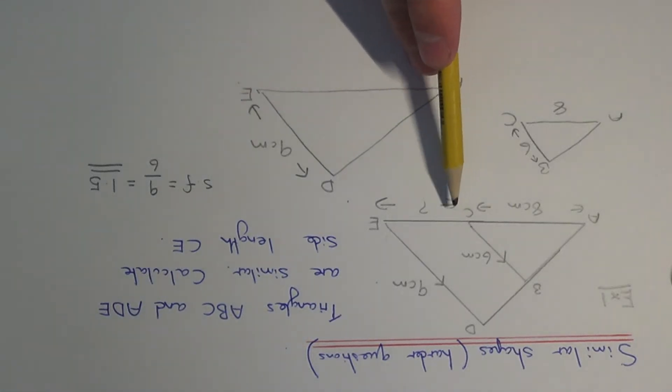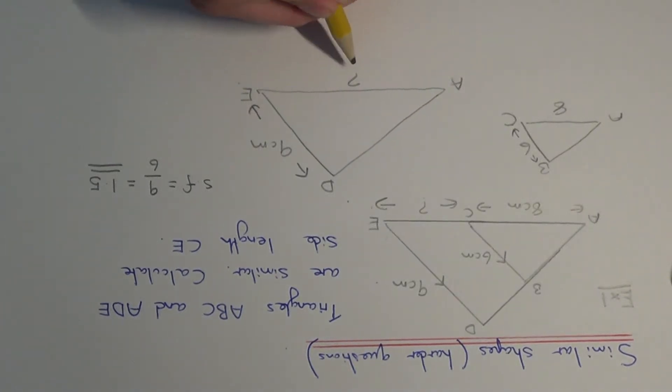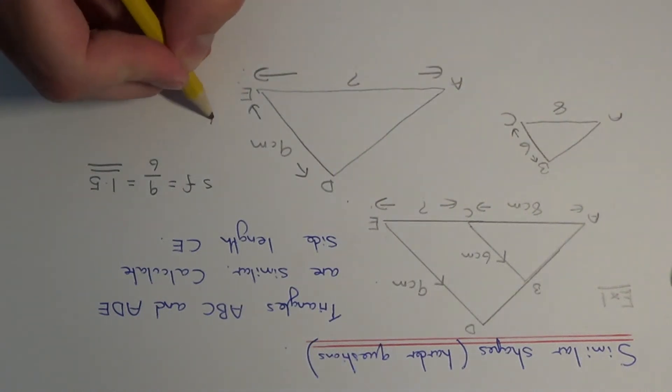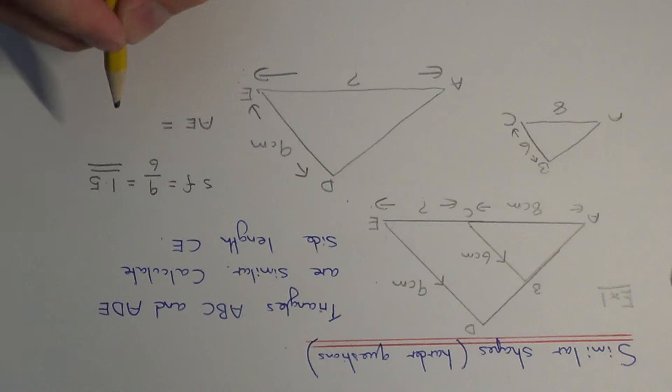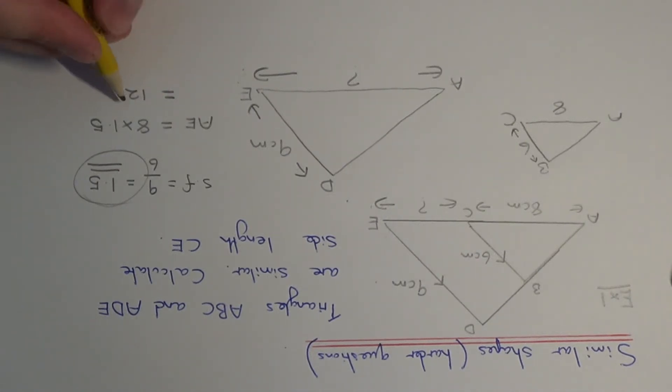So if we need to find side CE then we first of all need to work out the whole length of the bottom of the shape AE. So we can get AE by now multiplying by the scale factor that we've just found. So 8 times 1.5, that will give us AE. So that will give us an answer of 12cm.